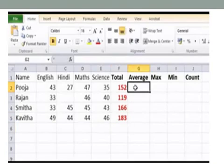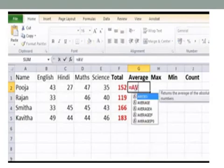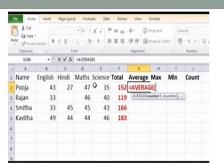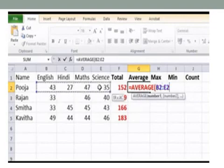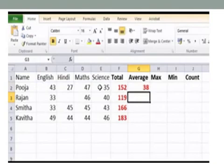Select cells B2 to E2, press enter. The same thing can be done for Rajan, Smitha, and Kavita.